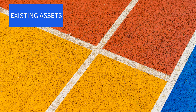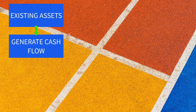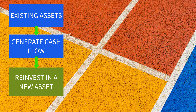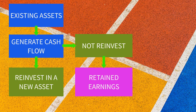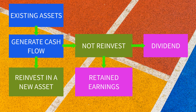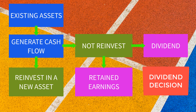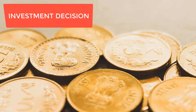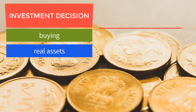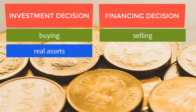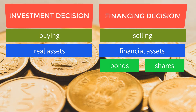Acquiring a machine will generate sales and cash flow. This cash flow will be used for reinvesting in new assets. If the firm will not reinvest all of these cash flows, it will be retained for future use, reflected in retained earnings, or paid as dividends to shareholders. This makes dividend decision part of financing decision. Investment decision is about buying real assets, while financing decision is about selling financial assets, such as bonds and shares of stock.